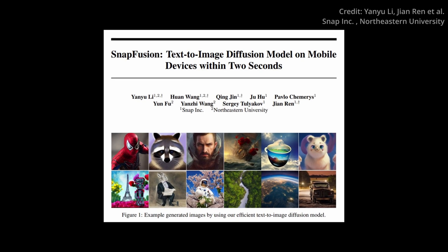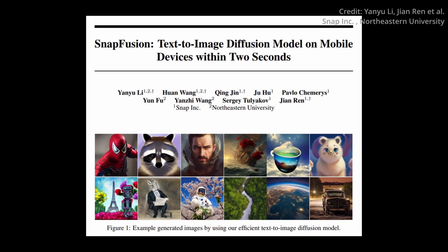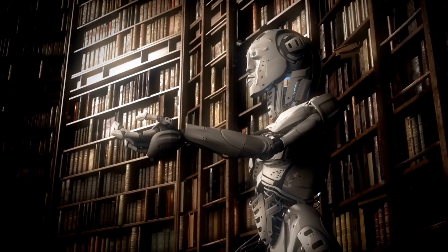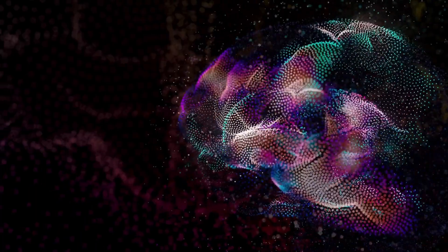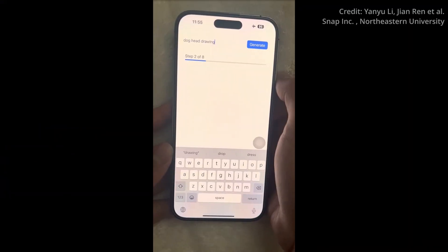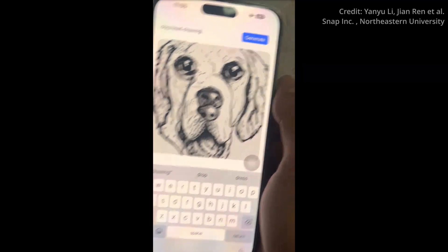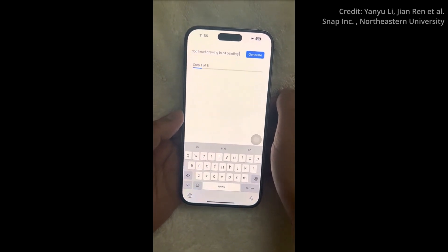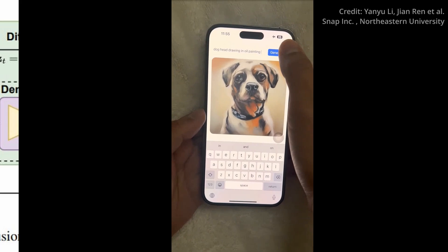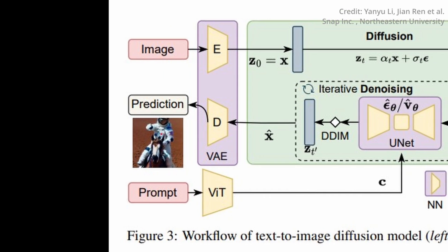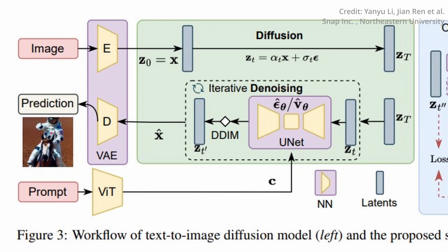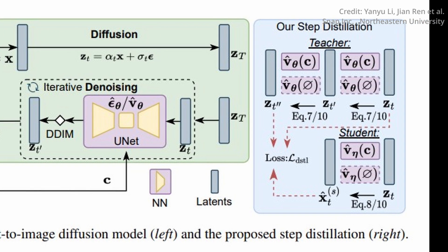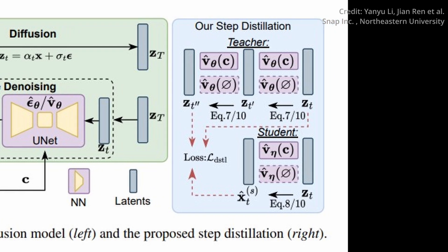Meanwhile, an equally groundbreaking model called SnapFusion has just been released to perform text-to-image diffusion almost instantly on mobile devices. Diffusion models have unquestionably emerged as a linchpin of the generative AI revolution, with applications including producing lifelike images from textual cues, image modification, high-resolution enlargement, video synthesis, and 3D asset production. However, their high computational demands had confined them to high-end GPUs — until now. SnapFusion enables mobile devices to generate images in less than 2 seconds.